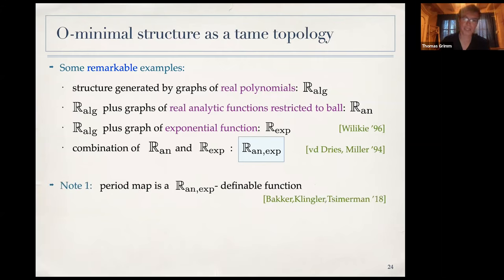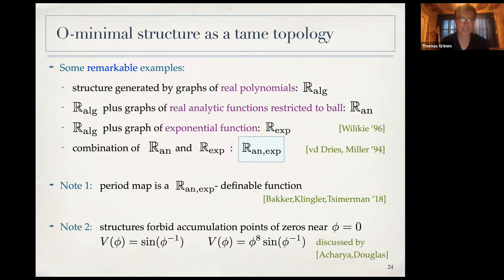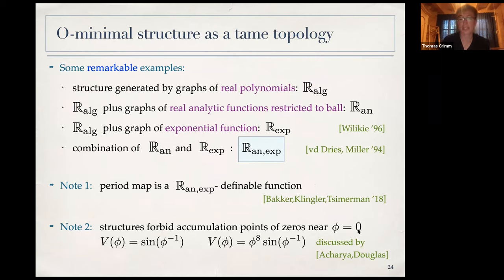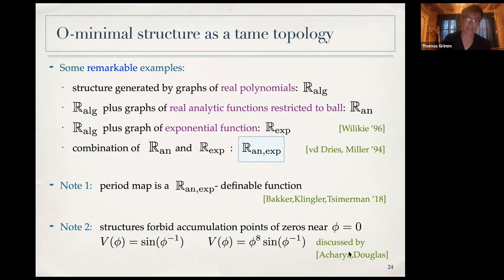The period map is exactly one of these special functions with tame properties. Furthermore, the O-minimal structure forbids accumulation points of zeros near special points. In the setting of Calabi-Yau manifolds, such accumulation points simply cannot occur — a very non-trivial statement.